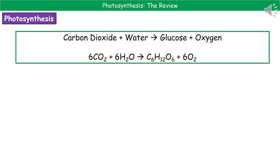Underneath we have the balanced symbol equation: 6CO₂ + 6H₂O → C₆H₁₂O₆ (glucose) + 6O₂.